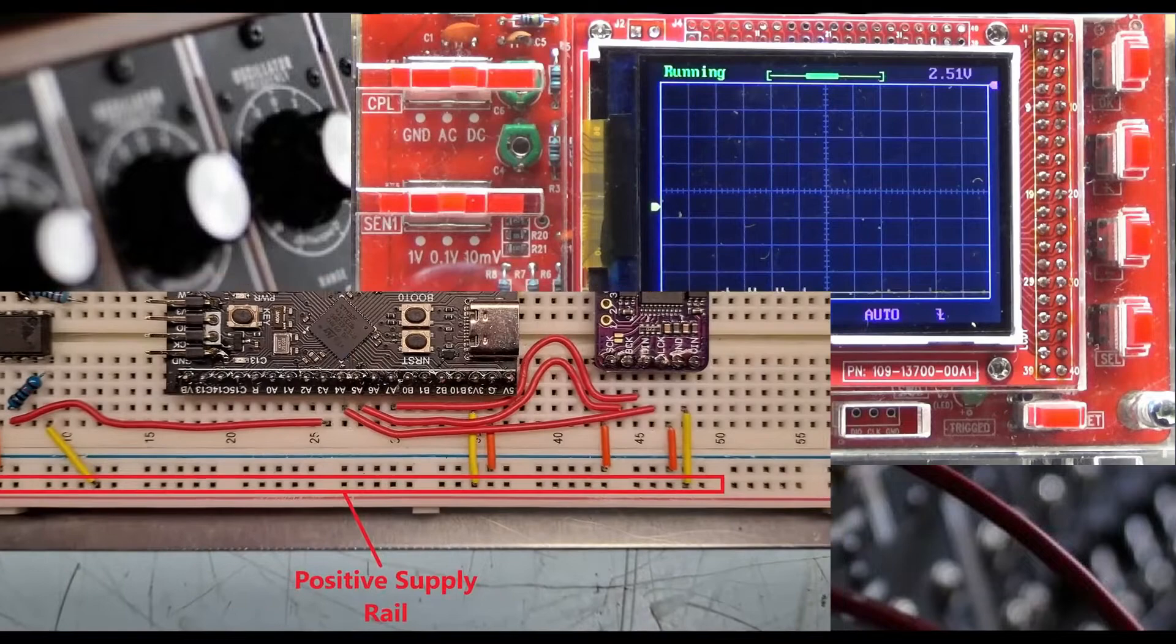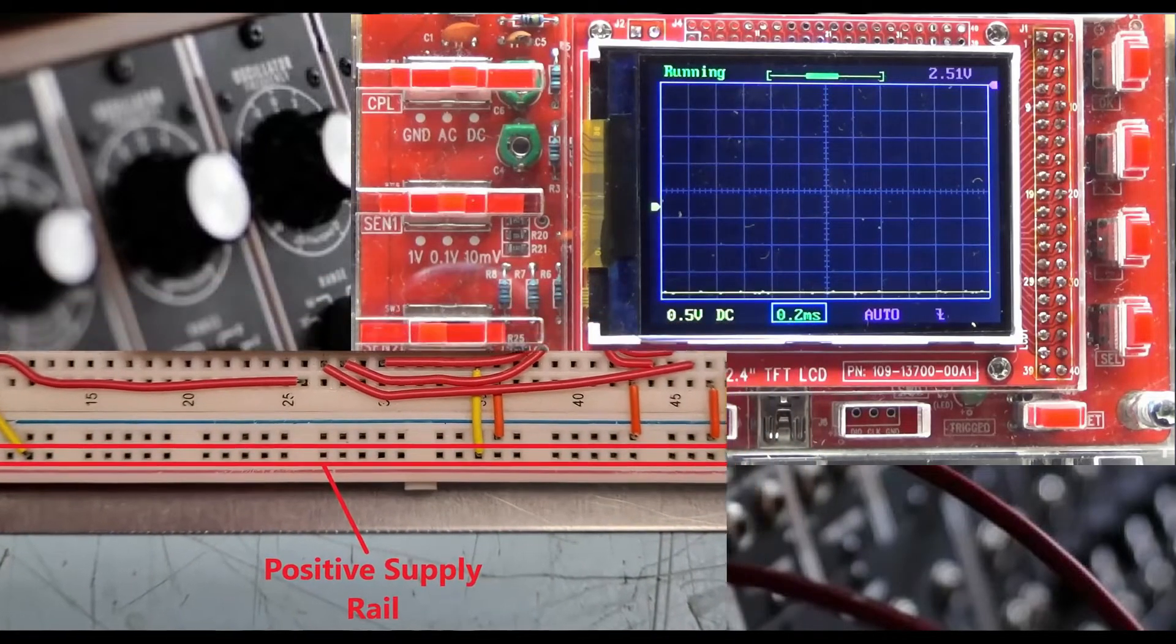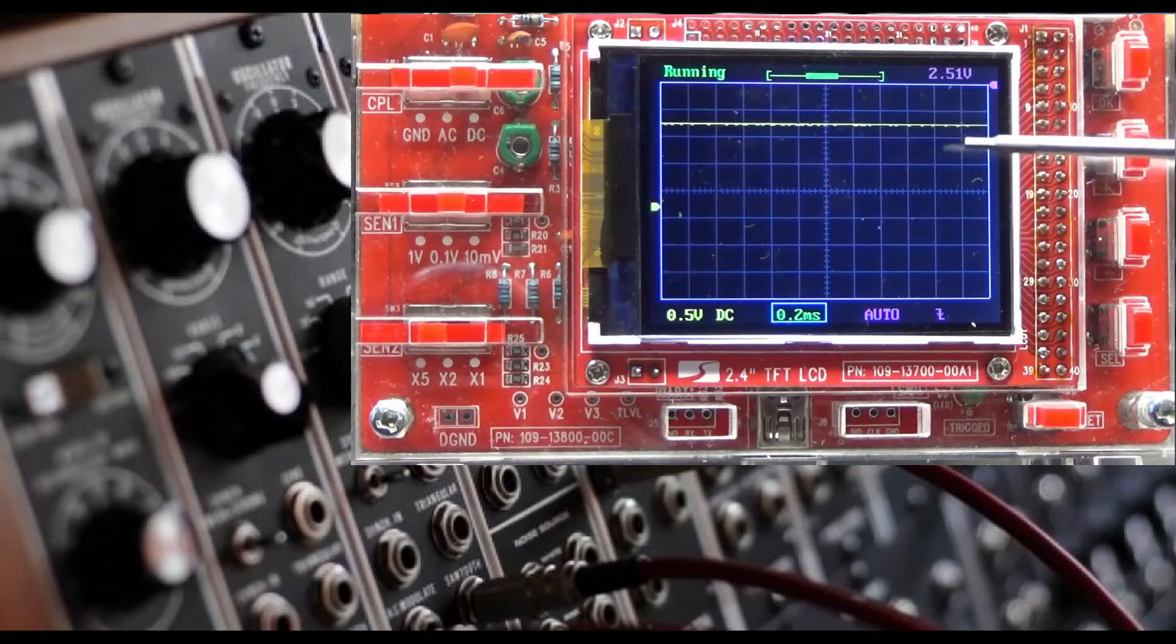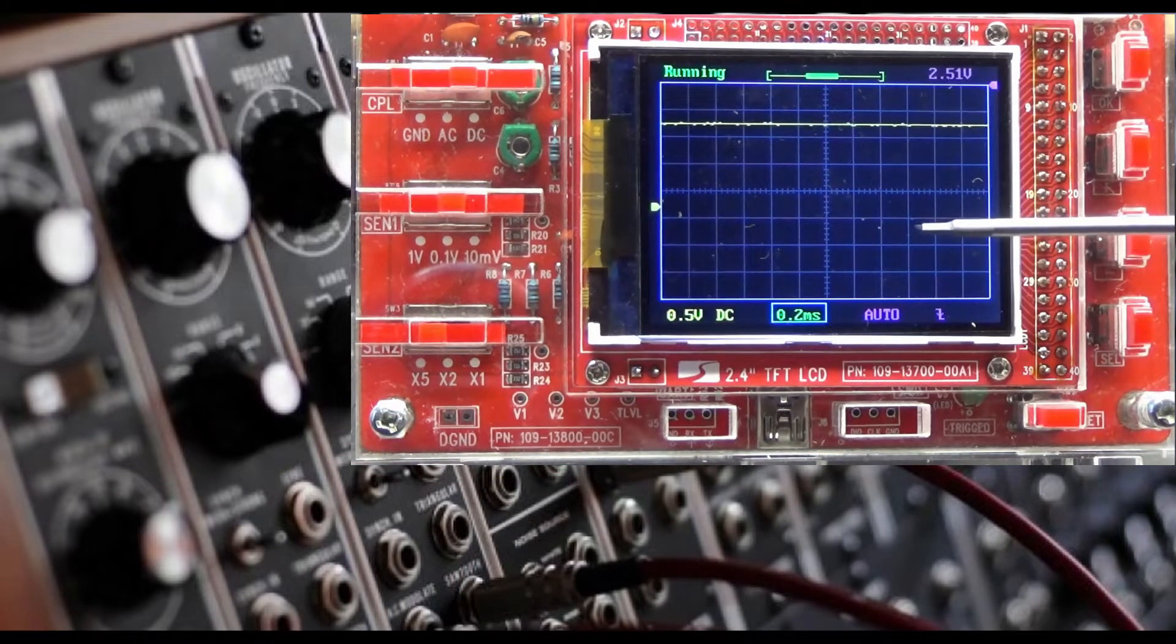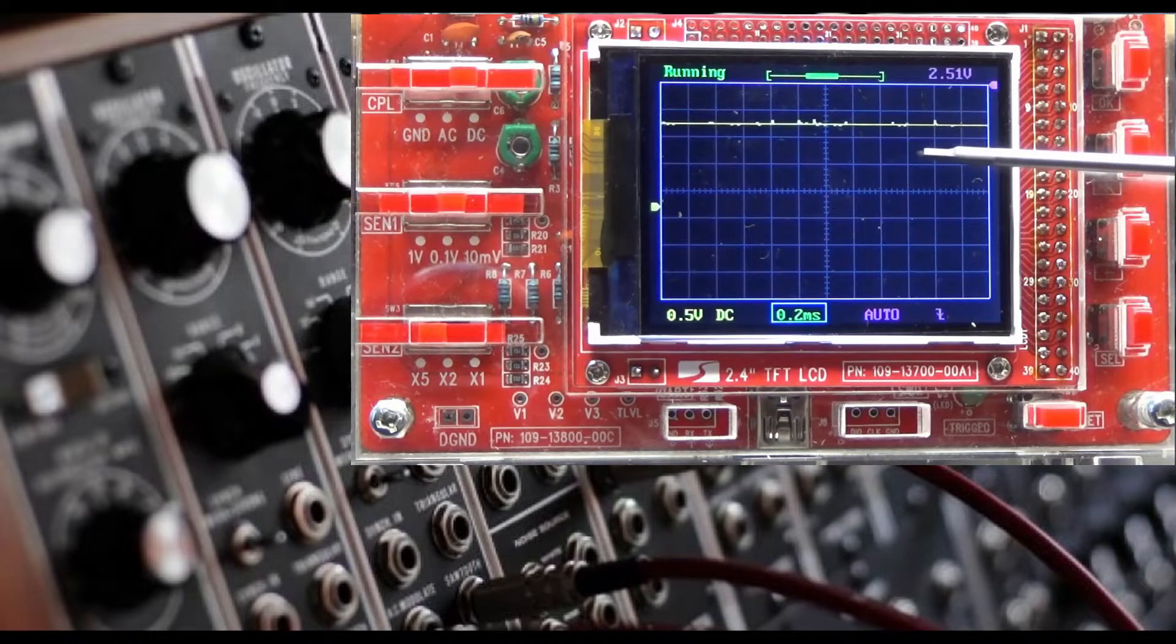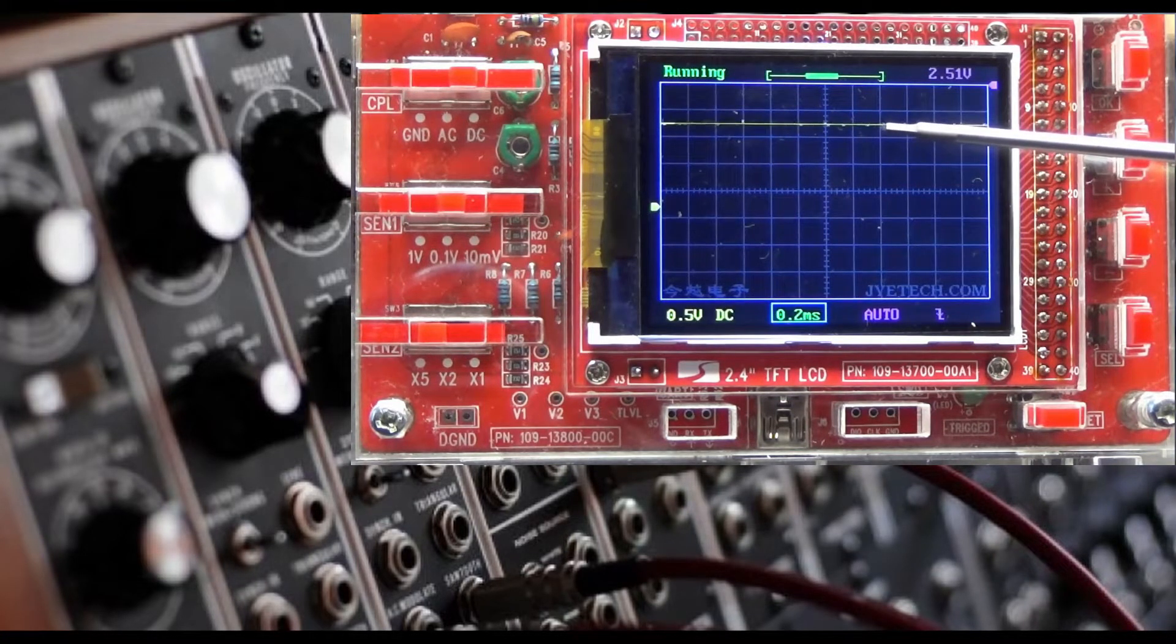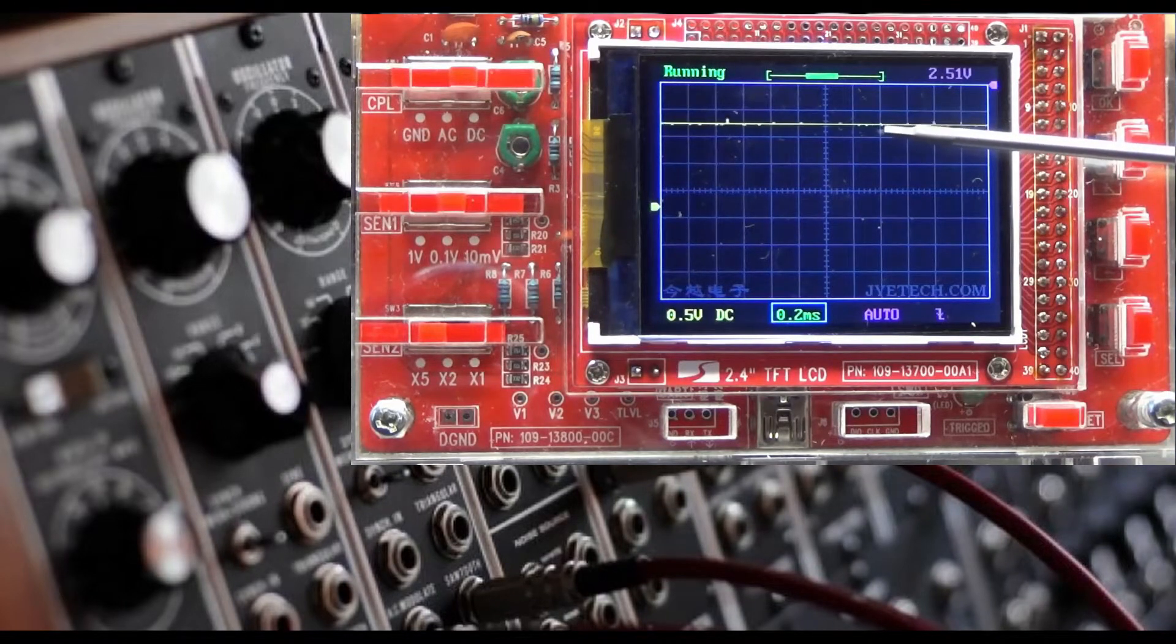Now I'm going to move the red lead to the 3.3 volt power rail on the breadboard and now we see the yellow line has jumped up here and we have 1, 2, 3, 4, 5, 6, 6 times 0.5 is 3 and a little less than half. So that's roughly 3.2 volts.